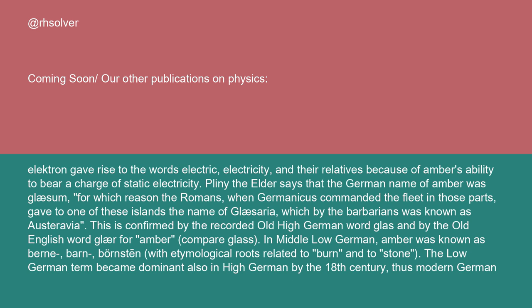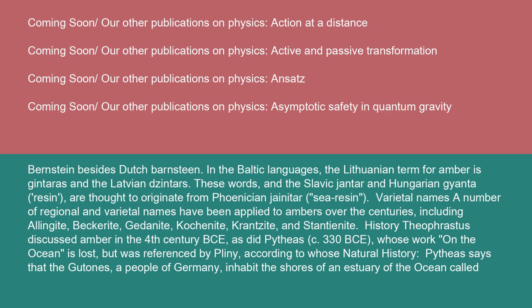Pliny the Elder says that the German name of amber was Glaesum, for which reason the Romans, when Germanicus commanded the fleet in those parts, gave to one of these islands the name of Glesseria, which by the barbarians was known as Osteravia. This is confirmed by the recorded Old High German word glass and by the Old English word glare for amber. In Middle Low German, amber was known as Bernstein, with etymological roots related to burn and to stone. The Low German term became dominant also in High German by the 18th century, thus modern German Bernstein, besides Dutch Barnstein. In the Baltic languages, the Lithuanian term for amber is Gintaras and the Latvian Dzintars. These words, and the Slavic Jantar and Hungarian Gyanta (Resin), are thought to originate from Phoenician janitor ceresin.